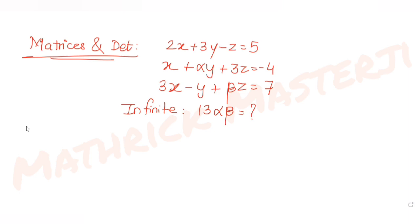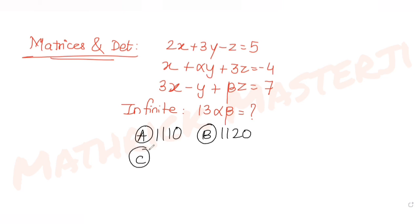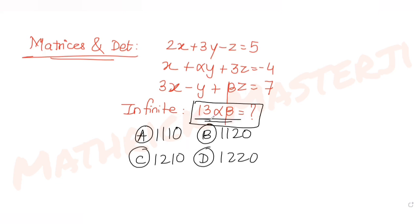The answer choices are: option A: 1110, option B: 1120, option C: 1210, and option D: 1220. We need to figure out which one is correct.